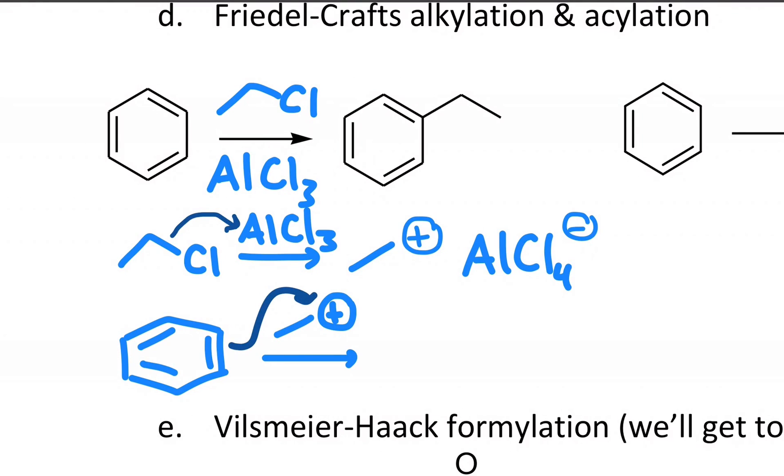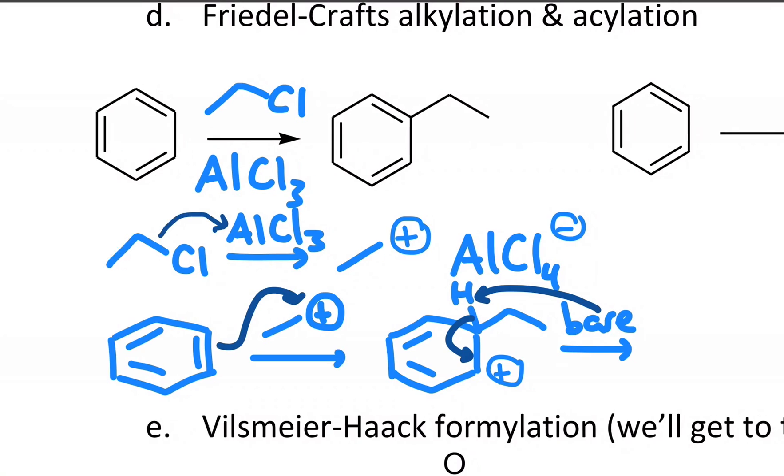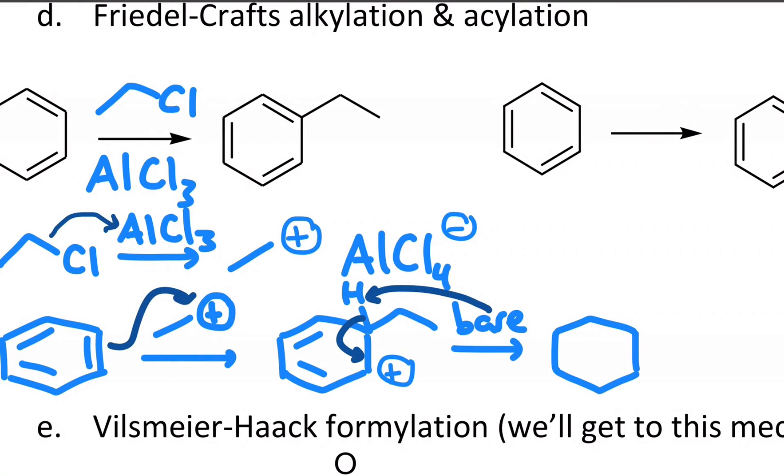So benzene attacks in this case the ethyl cation. I have two new carbons attached to the benzene ring, carbocation. And I take away that last H on the same carbon as where the new group goes to reform my aromatic ring with a new alkyl group.